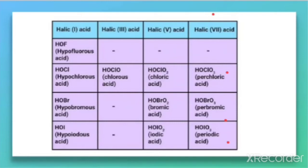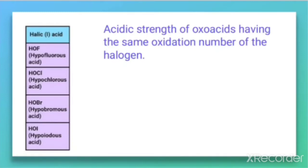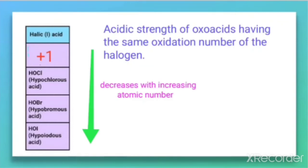It is better to learn these acids in tabular form so you can study them comparatively. When comparing the acidic strength of oxoacids having the same oxidation number of the halogen, the acidic strength decreases with increasing atomic number.